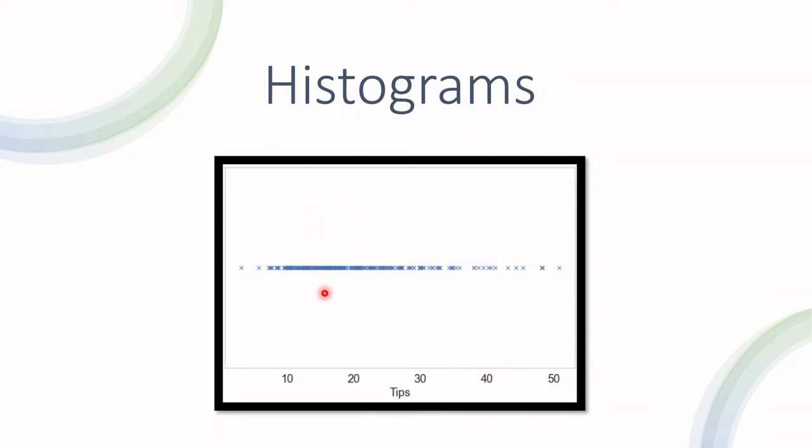What we do with histograms is we divide the axis into different bins and count the number of instances in each bin. The more instances there are, the higher the histogram bar is. If we try to plot it, it looks something like this.